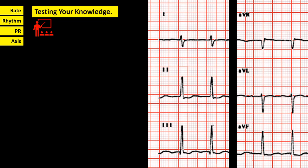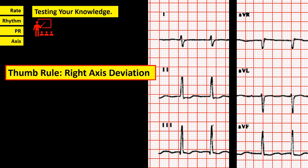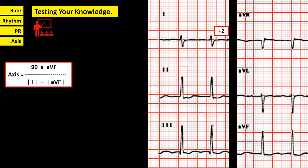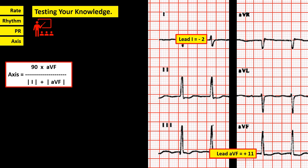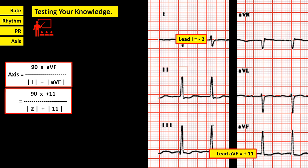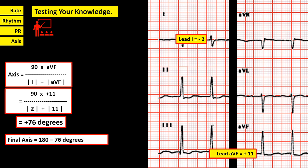Another tracing: by thumb rule, it is right axis deviation because lead 1 is predominantly negative and lead AVF is predominantly positive. Confirming with the formula: in lead 1, there are 2 boxes positive and 4 boxes negative, so the value is negative 2. In lead AVF, 12 positive boxes and 1 negative box, so the value is positive 11. Axis equals 90 times 11, divided by 2 plus 11, giving positive 76 degrees. But since lead 1 is a negative integer, we proceed to the additional step: 180 minus 76 equals positive 104 degrees, which is classified as right axis deviation.